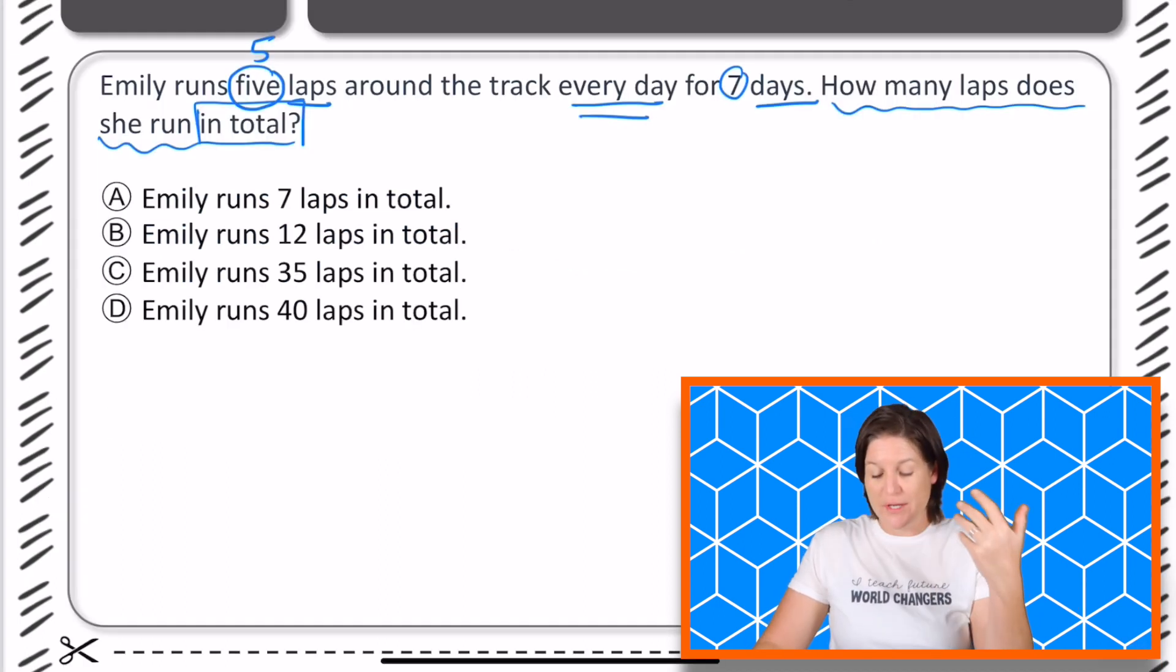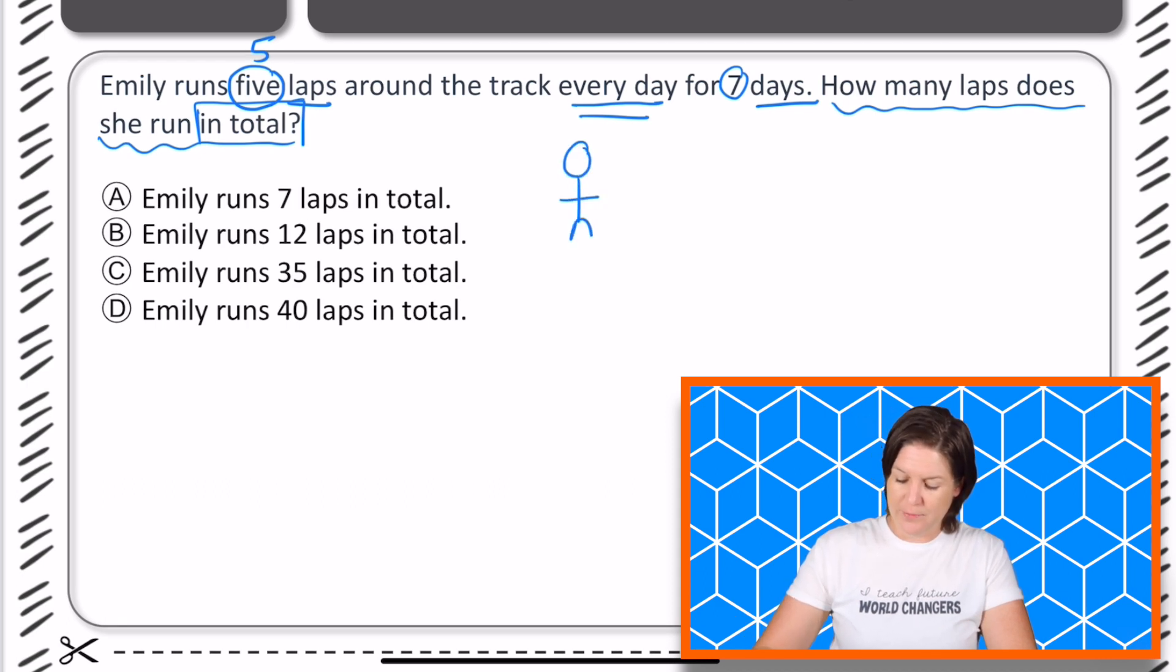So we have Emily who runs five laps around the track every day for seven days. I like to draw this out. We have somebody named Emily, an E up there for Emily. And she runs five laps around the track every day for seven days.